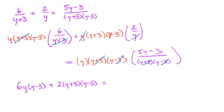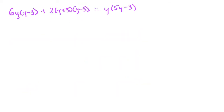On the right-hand side I've got y times 5y minus 3. All denominators are gone — this is just one big polynomial equation that I have to expand and then solve. Expanding everything and collecting terms: distributing 6y gives me 6y squared minus 18y.